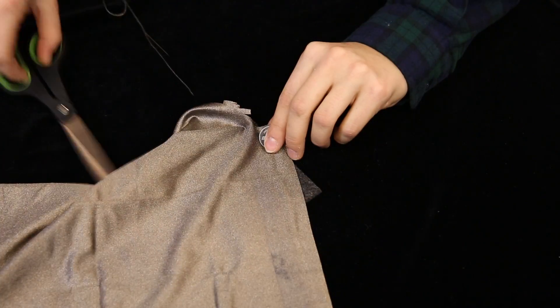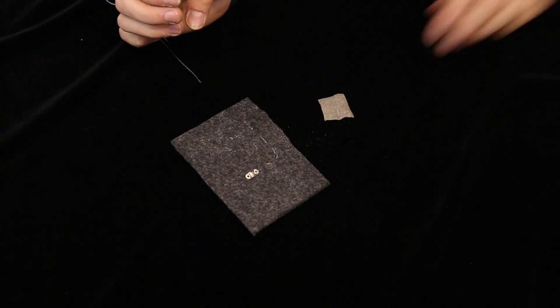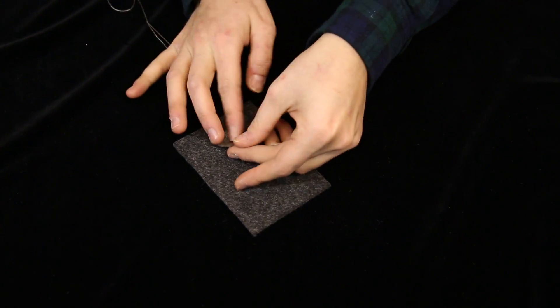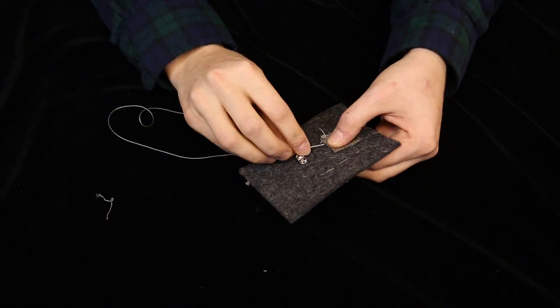Cut a patch of conductive fabric that is ever so slightly wider than the coin cell battery. Place the patch directly on top of your knotted conductive thread and sew down three sides, making a small pocket.